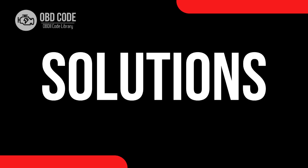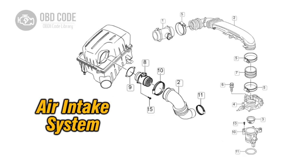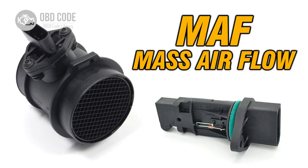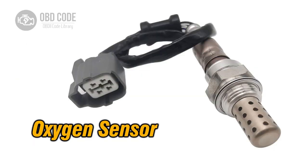Code solutions P2177: 1. Inspect and replace any damaged or leaking vacuum hoses in the intake system. 2. Check and clean the mass airflow sensor (MAF) to ensure accurate measurement of incoming air. 3. Test and potentially replace the oxygen (O2) sensor to improve fuel mixture control.